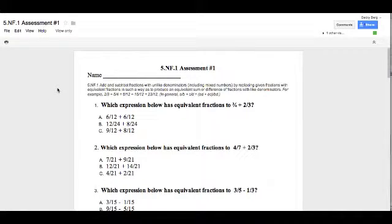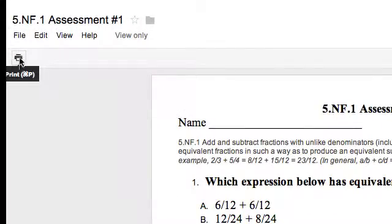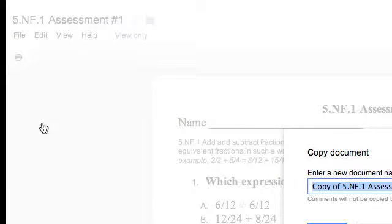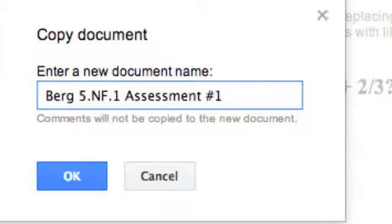So a couple other options you would have to use this assessment is you can either directly print it, as I just showed you, or you can go to File, Make a Copy, because right now you're just viewing this assessment. And I'm going to call it Berg 5-NF1, assessment number 1. And you could just leave it as Copy of Assessment. I'm going to click OK.